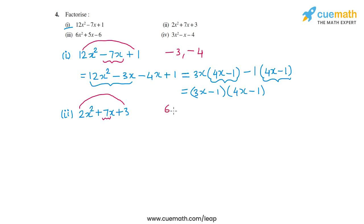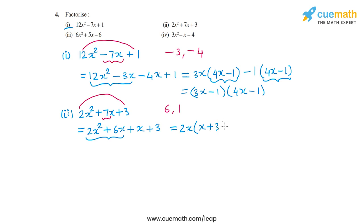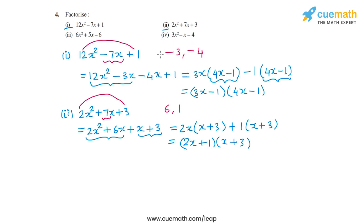Those two numbers are 6 and 1, so I can split the middle term as 2x² plus 6x plus x plus 3. From the first pair I take out 2x common, giving 2x times x plus 3. The second term is itself x plus 3, written as 1 times x plus 3. Taking out x plus 3 common, I am left with 2x plus 1 times x plus 3. This is the factored form of the second polynomial.